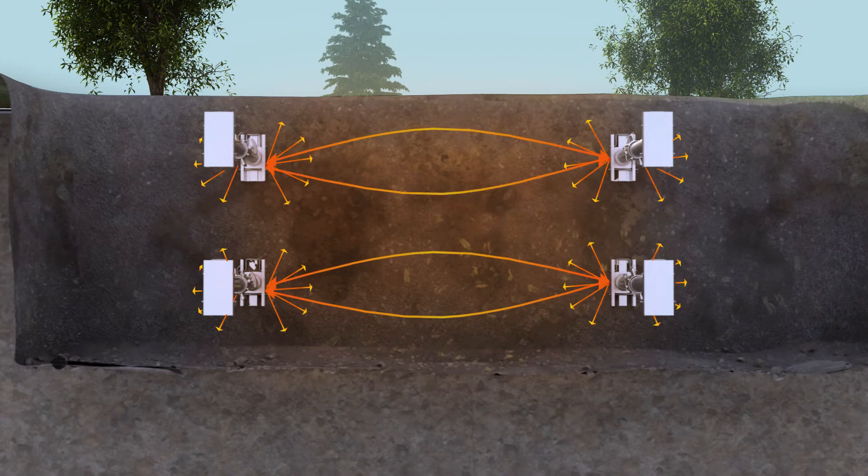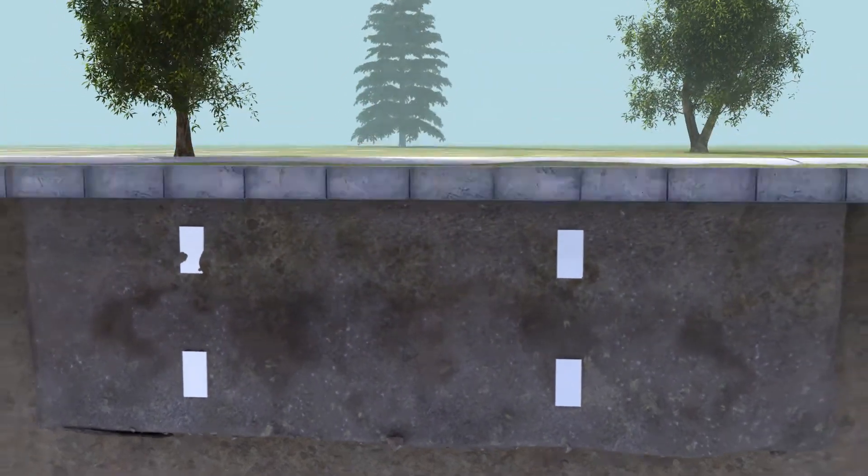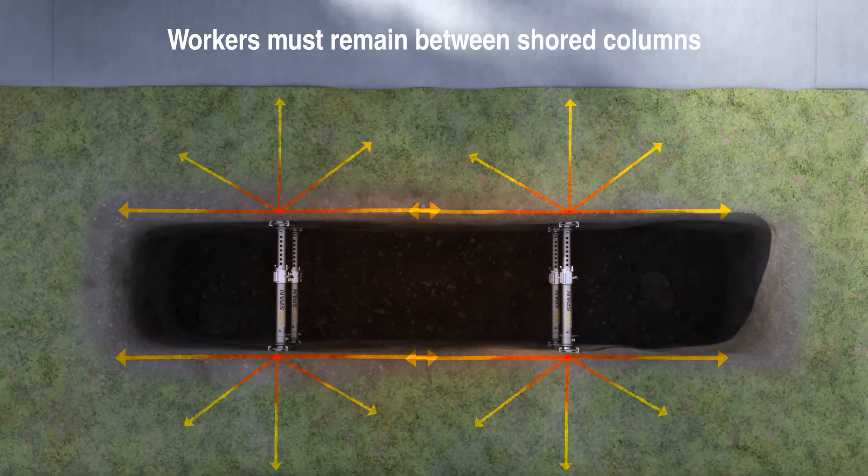Workers must surround themselves with this arch of protection. It's for this reason that shoring is installed in columns. The worker must remain within the shored columns at all times.